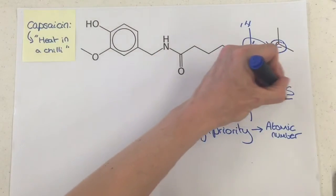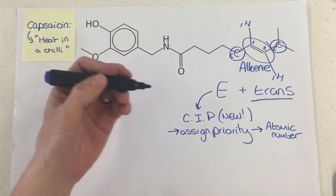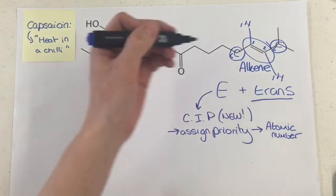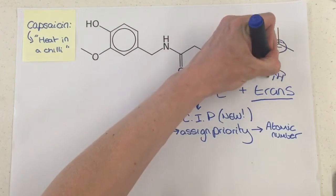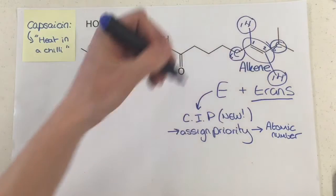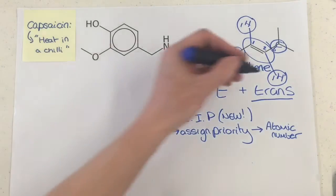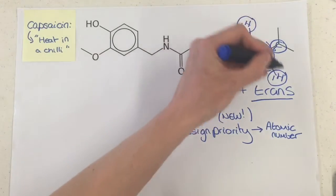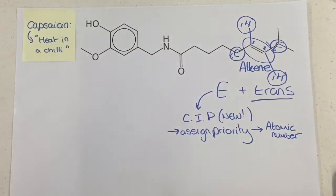Now trans — however, for cis-trans isomerism, we don't look at priority. We simply look to see if on each carbon there is a hydrogen, and then how those hydrogens are positioned. This one here — the hydrogens are across from each other — so it's trans, like transatlantic is across the Atlantic.